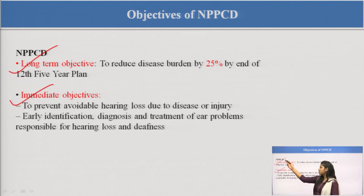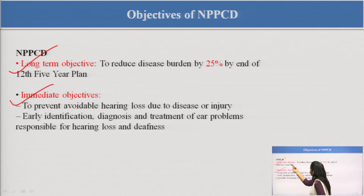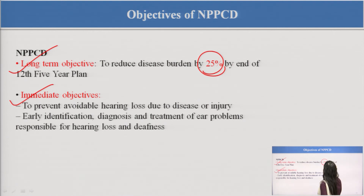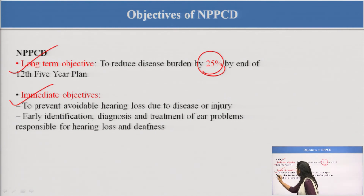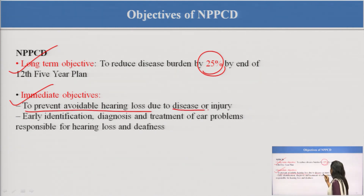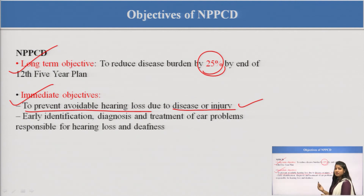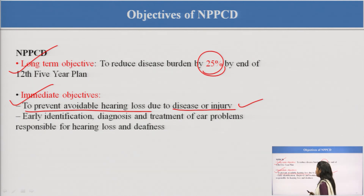The long-term objective is to reduce the disease burden by 25 percent by the end of the 12th Five Year Plan. The immediate objectives are the actions to be taken in the field. The first immediate objective is to prevent avoidable hearing loss due to disease or injury — sometimes trauma, injury, or diseases cause hearing loss, and that we can prevent.